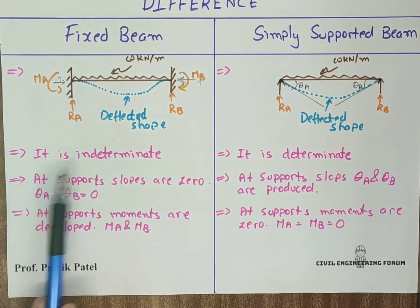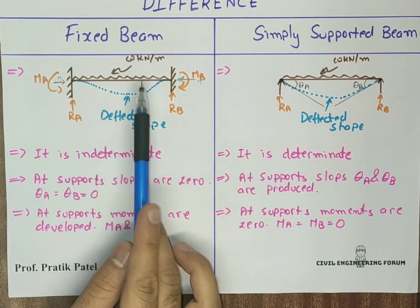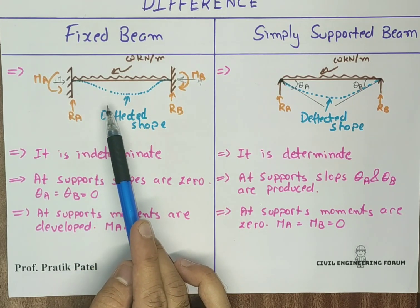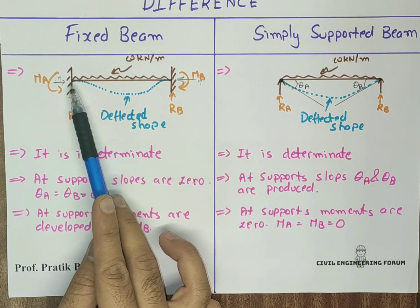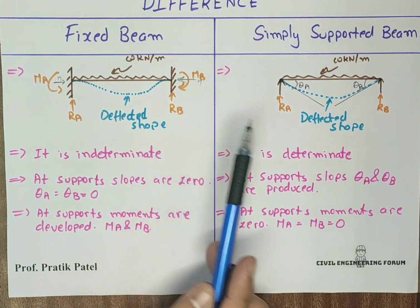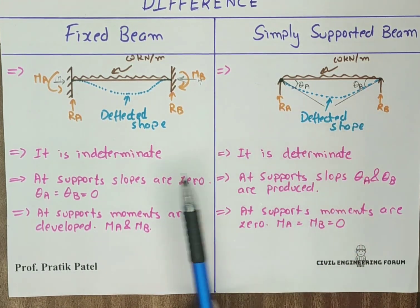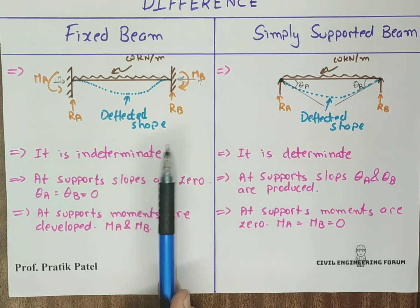The light blue marker shows the deflected shape of the beam. For the fixed beam, this is how the deflection appears — the deflected shape of the fixed beam is absolutely different from that of the simply supported beam.